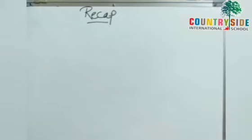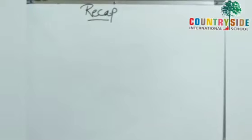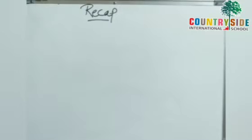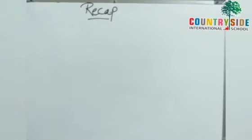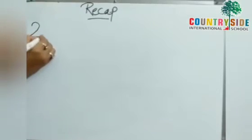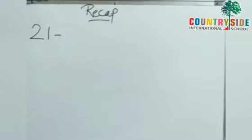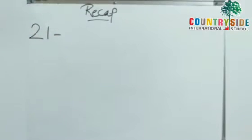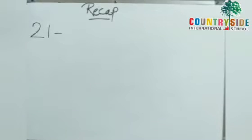Now children, before starting in the book we will do a short recap of number names that we have learnt. We have learnt the number names from 1 to 50. What number has ma'am written? 21. Now we will do the recap of the spelling of 21.